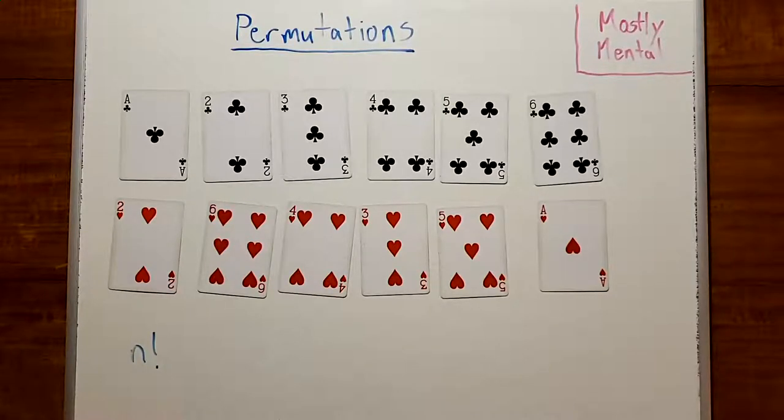There are a few natural ways to represent a permutation, but the one we'll find most useful today is what's known as cycle notation.